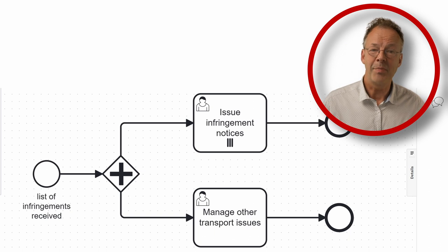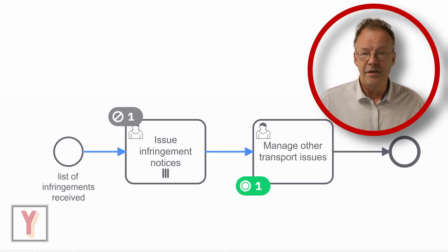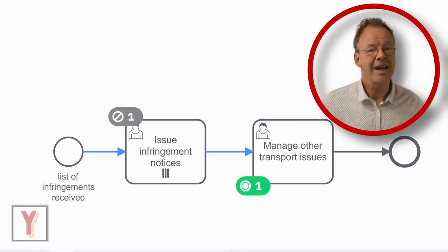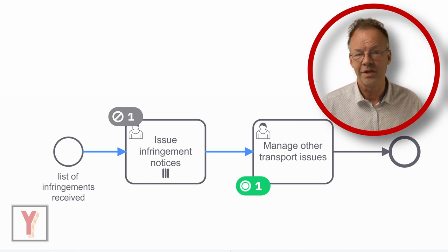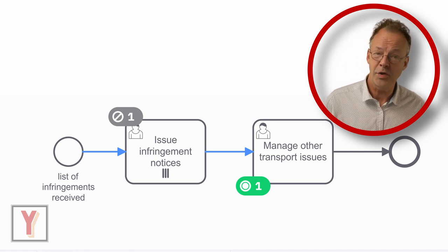This may look like a workaround, but let's take another look at the first version. The sequence flow between issue infringement notices and manage other transport issues suggests that the second task can only start when the first one has been finished.